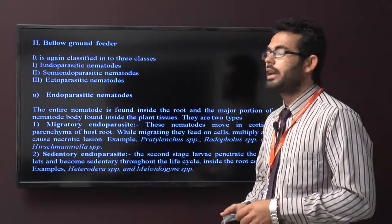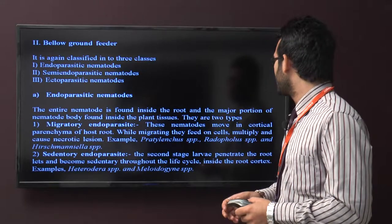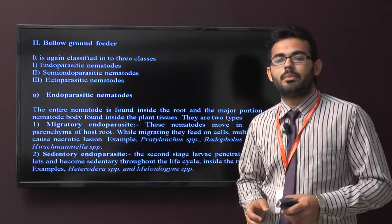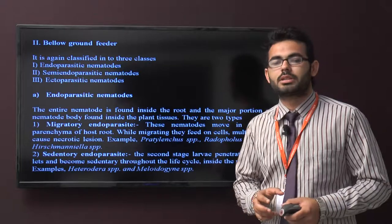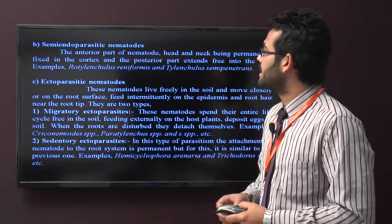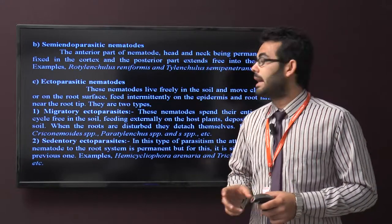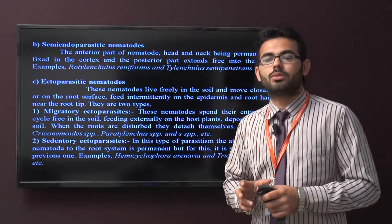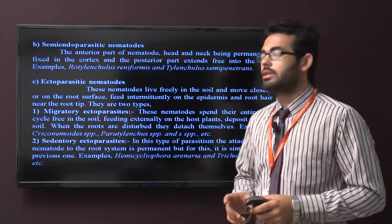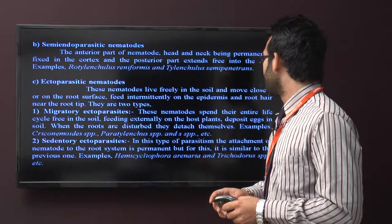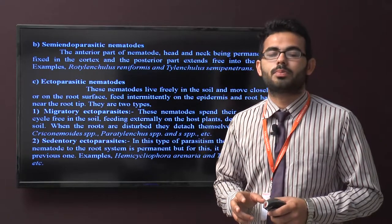Below-ground feeders are divided into three parts: endoparasitic, semi-endoparasitic, and ectoparasitic. In migratory endoparasitic, nematodes move through the cortical parenchyma of the host root while migrating, feed on cells, multiply, and cause necrotic lesions. In sedentary endoparasitic, the second-stage larva penetrates the roots and becomes sedentary throughout the life cycle. In semi-endoparasitic, the anterior part — head and neck — is permanently fixed in the cortex while the posterior part extends freely in the soil. In ectoparasitic nematodes, they live freely in the soil, feed intermittently on the epidermis and root hair near the root tip. Migratory ectoparasitic nematodes spend their entire life cycle in the soil, feeding externally on the host plant and depositing eggs in the soil. In sedentary ectoparasitic, the nematode's attachment to the root system is permanent.